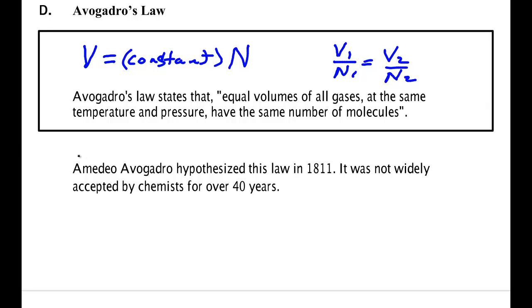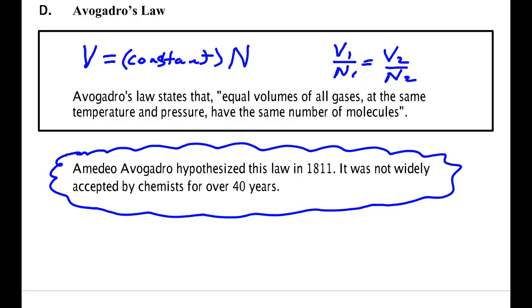Avogadro hypothesized this law in 1811. And you may think that this gets back to Avogadro's number and some other things he did. You might think that it was immediately accepted. It was not. It took over 40 years. In fact, almost 50 years before chemists actually accepted it.